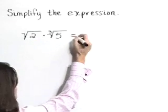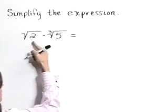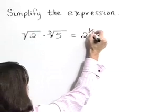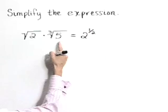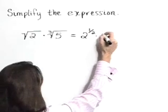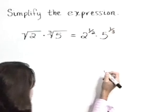But we can write these in an exponential form. The square root of 2 is 2 to the one-half power. The cube root of 5 is 5 to the one-third power.